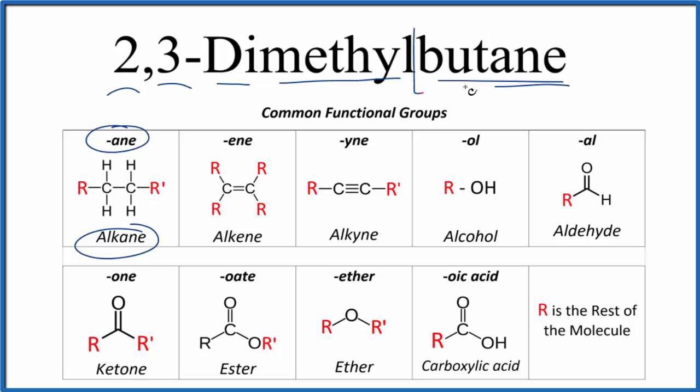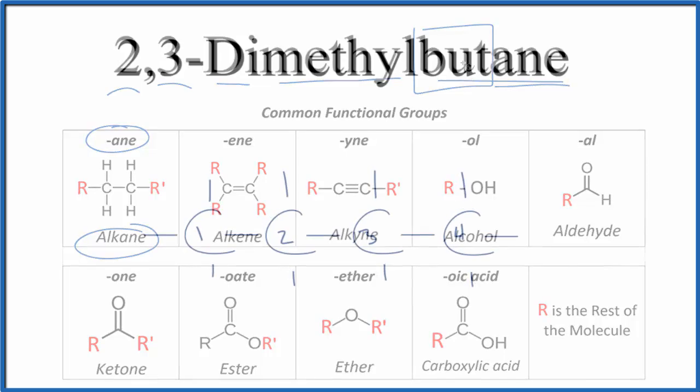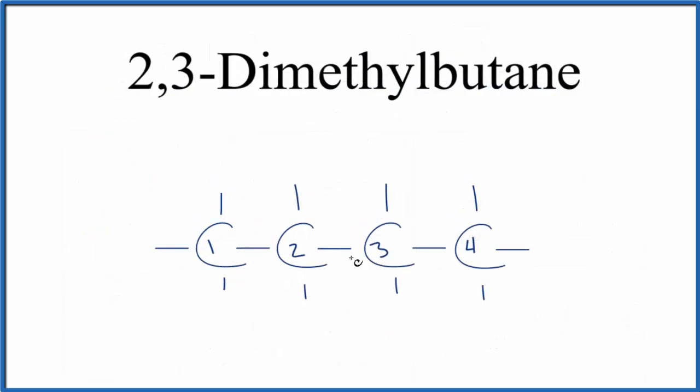Butane means we'll have four carbon atoms all attached with single bonds. Let's draw that. So we have our carbons, and we've labeled them 1 through 4. These lines here go to hydrogen atoms. So this is just butane right now.